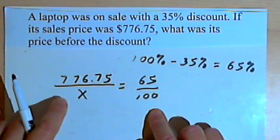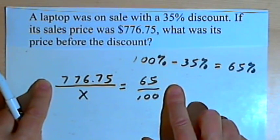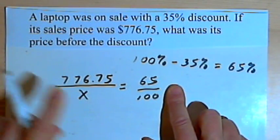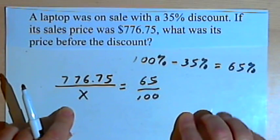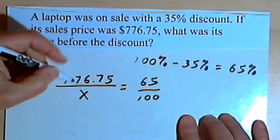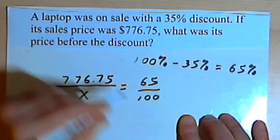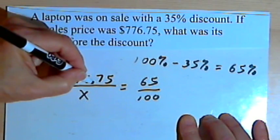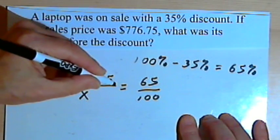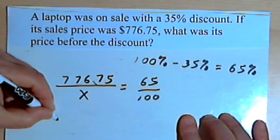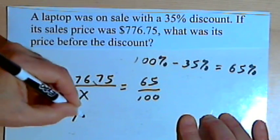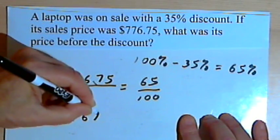Multiplying 776.75 times 100 just means moving the decimal point over two places to the right. So that's 77,675.